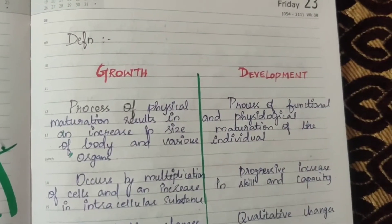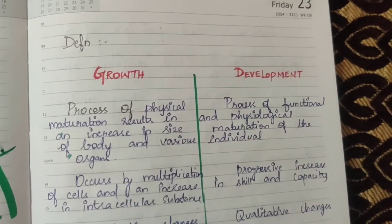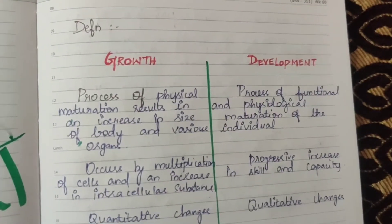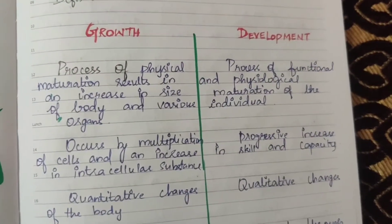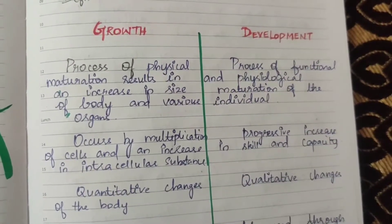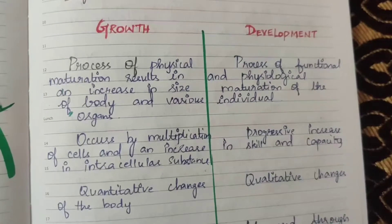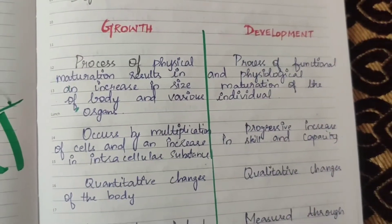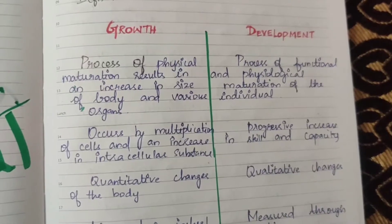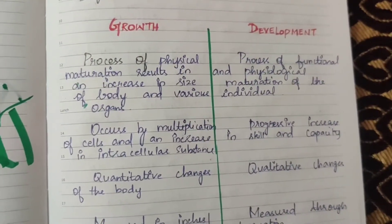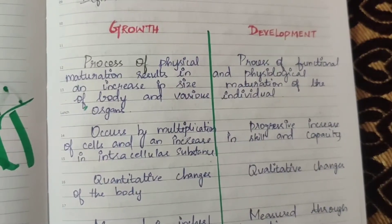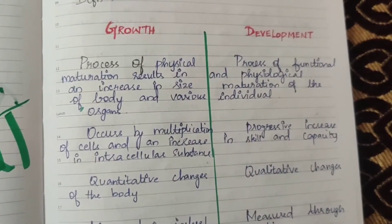First definition — I am going to distinguish. This is easy to learn. Growth is the process of physical maturation that results in an increase in size of the body and various organs. Physical maturation is mature and growth. This is the increase of body size — that is growth.